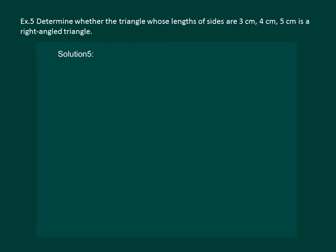Let us read the question. Determine whether the triangle whose lengths of sides are 3 cm, 4 cm, 5 cm is a right-angled triangle.